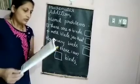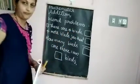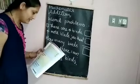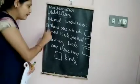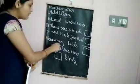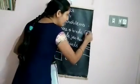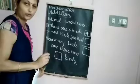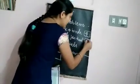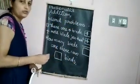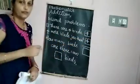The first problem: there are four birds, and four more birds join them. How many birds are there now? First there were four birds — write four in the box. Four more birds join them — write four in the next box. To find the total number of birds, you have to add these two numbers: four plus four.